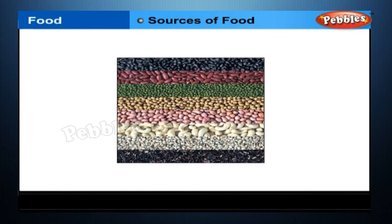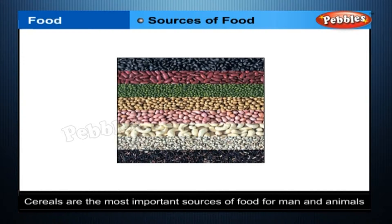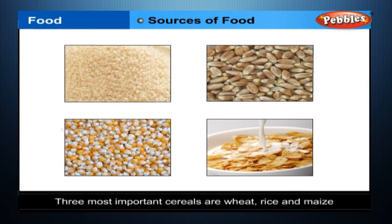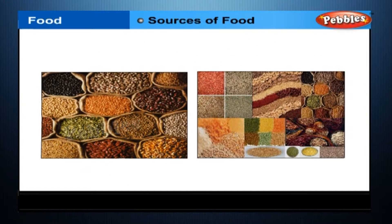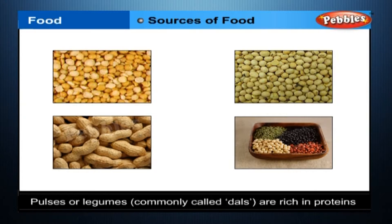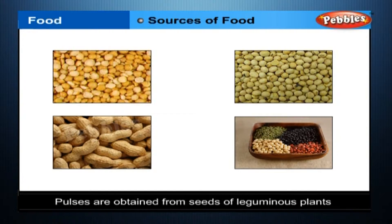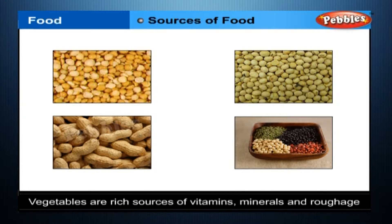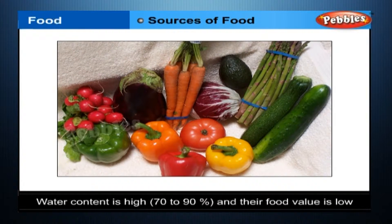Sources of food — plant food. Cereals are the most important sources of food for man and animals. They are rich sources of carbohydrates. The three most important cereals are wheat, rice, and maize, obtained from grains, which are biologically the fruits of the plant. Pulses or legumes, commonly called dals, are rich in proteins and are obtained from seeds of leguminous plants. Common pulses include pea, bean, groundnut, soya bean, and gram. Vegetables are rich sources of vitamins, minerals, and roughage. Water content is high — 70 to 90 percent — and their food value is low.